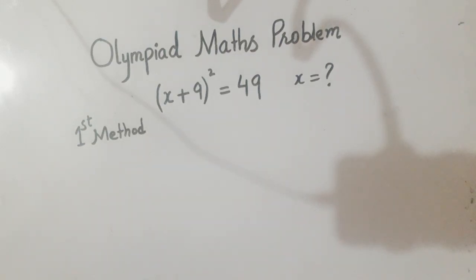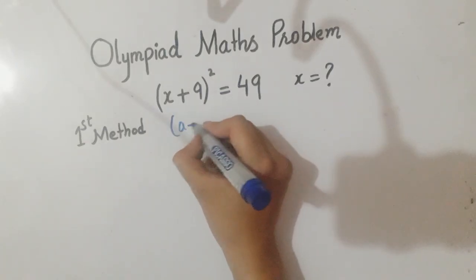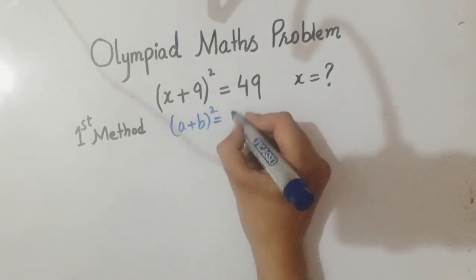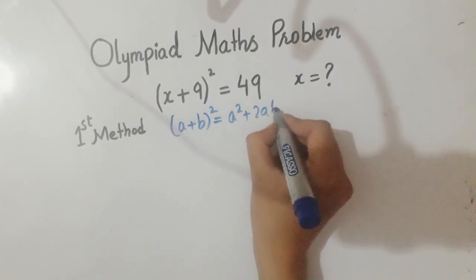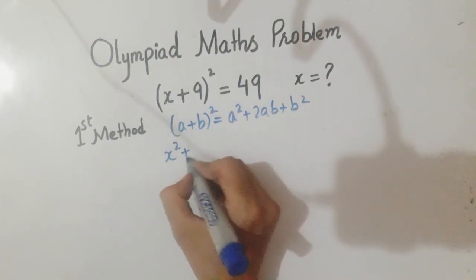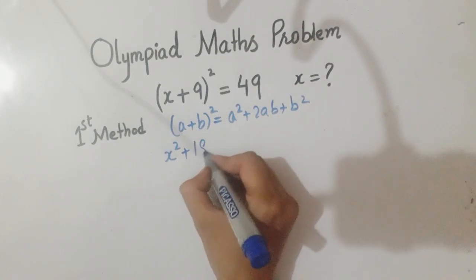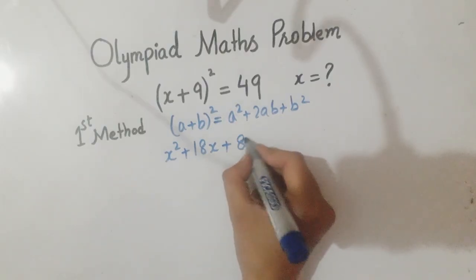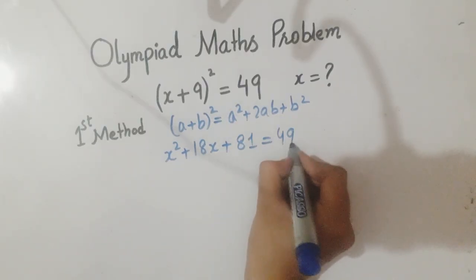According to the first method, we will apply the formula of (a+b)². So (a+b)² = a² + 2ab + b². This will become x² + 9×2 = 18x, plus 9² = 81, equals 49.